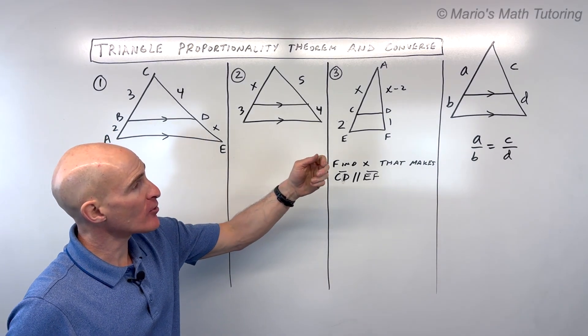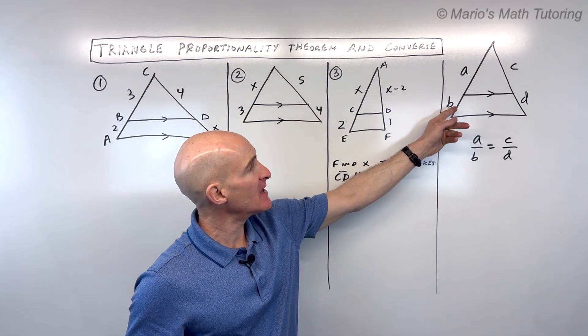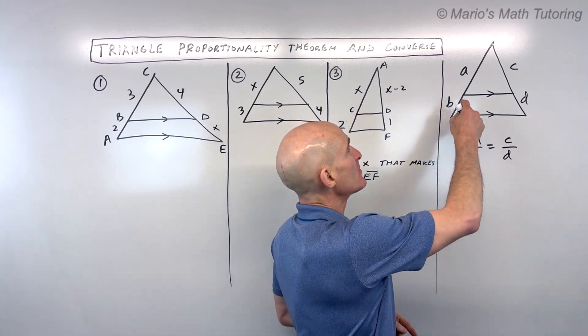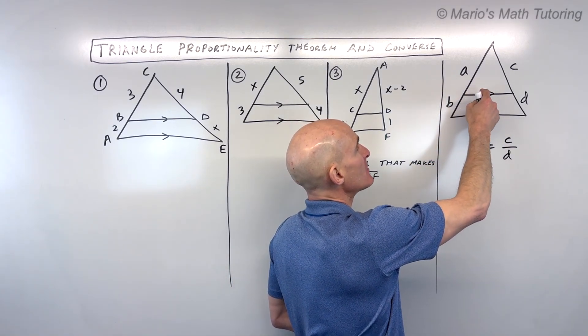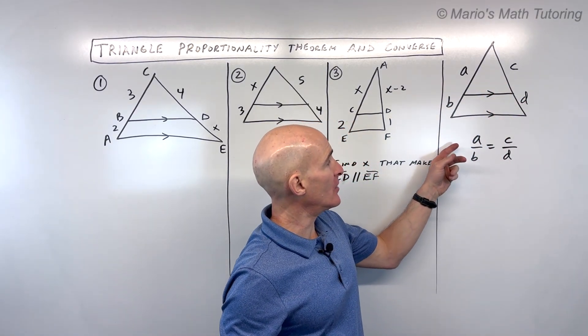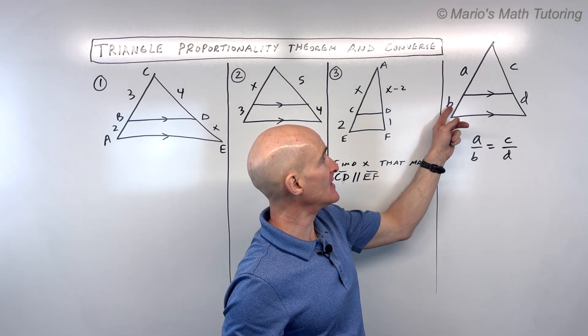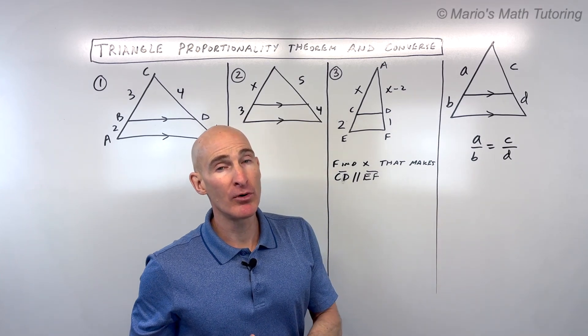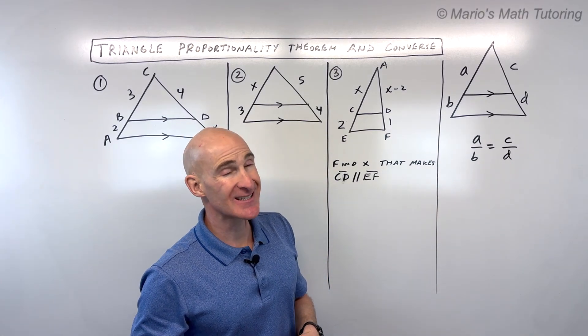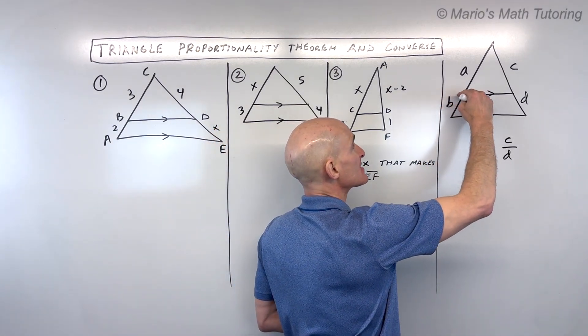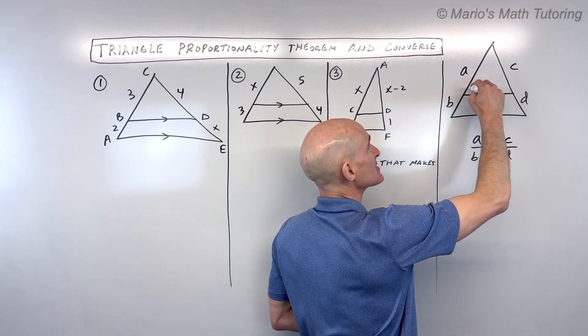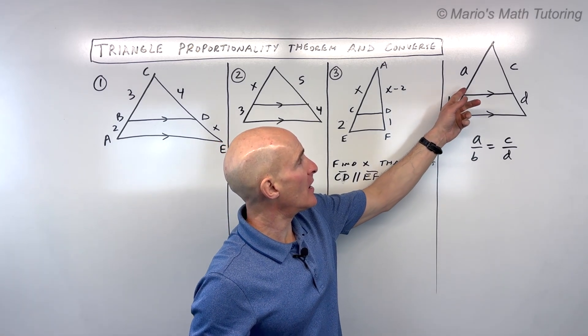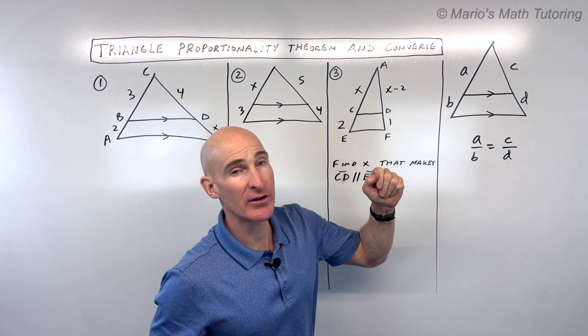So first, the triangle proportionality theorem. What it tells us is if you draw a line segment that's parallel to the base of a triangle, it splits this side into two segments and this side into two segments in a proportion such that a is to b as the ratio of c is to d. Now, some books will call this the side splitting theorem because this segment is splitting the two sides into two segments, but the formal name is the triangle proportionality theorem.